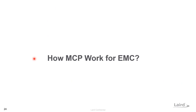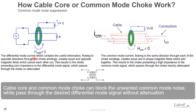This is the fundamental for common mode noise suppression. When a cable core or common mode choke is applied, the common mode current flows in the same direction through each of the choke windings, creating equal and in-phase magnetic flux which adds together. This results in the choke presenting a very high impedance to the common mode signal, which is heavily attenuated and cannot pass through the cable core or common mode choke, while the differential mode signal passes without attenuation.